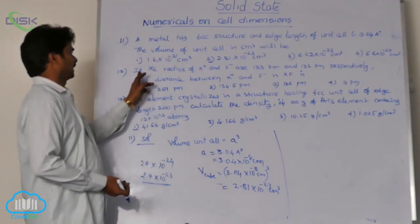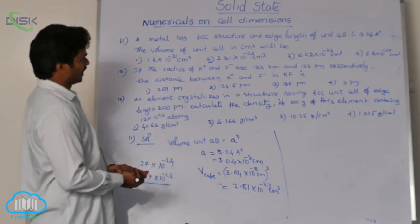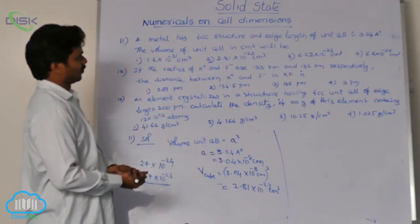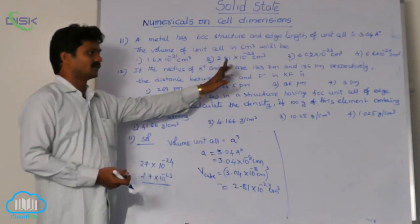12th question. If the radius of K plus and F minus are 133 picometers, so what is the ionic compound here given? Potassium fluoride.